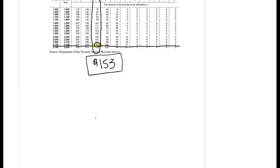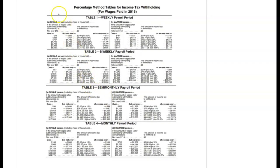For question two we're going to use the percentage method. With the percentage method you get a large table with weekly payroll, bi-weekly payroll, all the way to monthly. On the left you have people that are single compared to married, because they'd have different tax rates. I've highlighted the relevant section of the table so the numbers are a bit larger and easier to see.